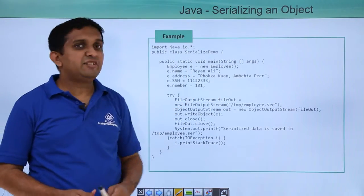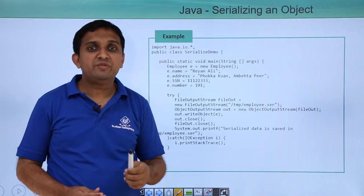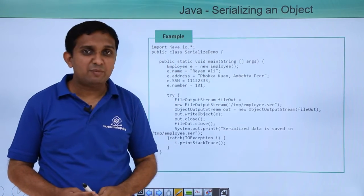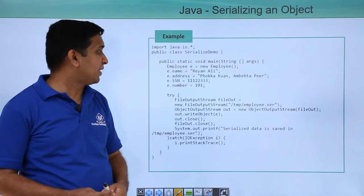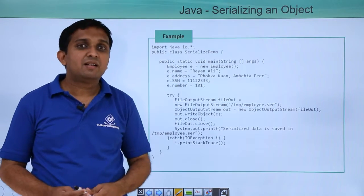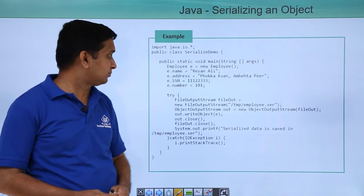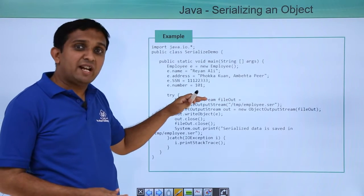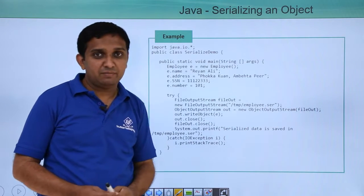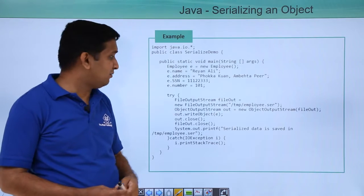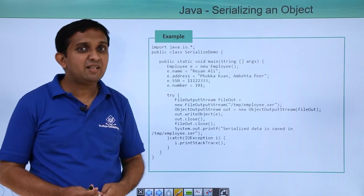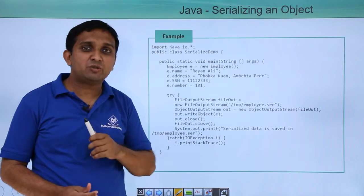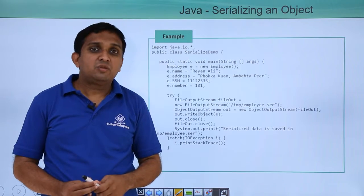For the serialization demo, a SerializedDemo class is shown. Inside the main method, an object of Employee class is created — Employee class already implements the Serializable interface — and values are assigned to the attributes. Then a FileOutputStream object is created, passing the path of the file where you want to store the object. An ObjectOutputStream object is also created, passing the FileOutputStream object. Using the writeObject method, the object is written into the file. After that, both the stream objects — FileOutputStream and ObjectOutputStream — are closed.